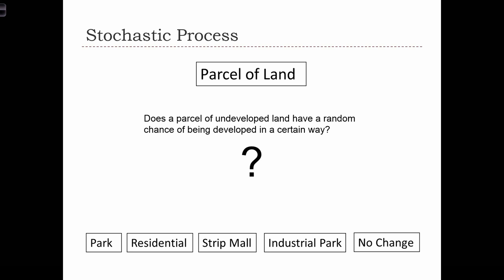The question is: is this a random process or a stochastic process? Do we have any information that would allow us to assign different levels of probability to each of these five outcomes? Or is it a complete shot in the dark, and each of the five outcomes are equally likely? Of course, the answer is this is not a totally random process, but a stochastic one.